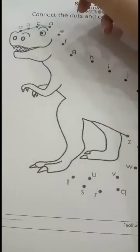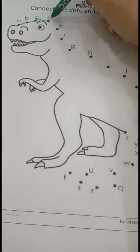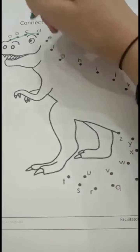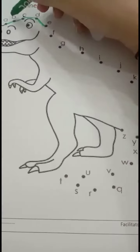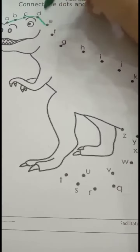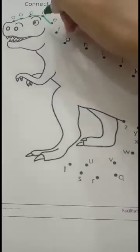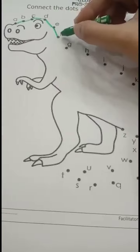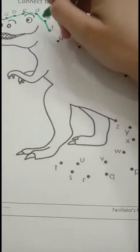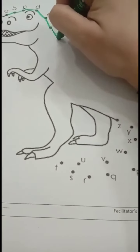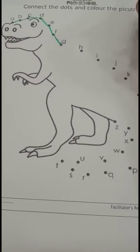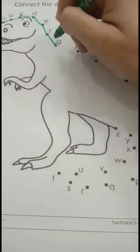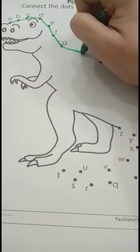Good job. Let's move forward. Which letter will come after D? Absolutely right — letter E. Let's connect the dot. So A, B, C, D, E, F. Very good. So let's connect the dot to F. Now which letter will come after F? G. Fantastic. So let's move forward, G. Then which letter will come after G? H. Very good. And H is here, so let's connect the dot.